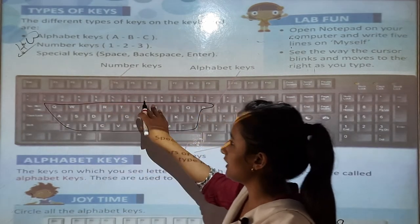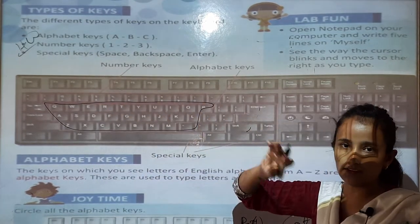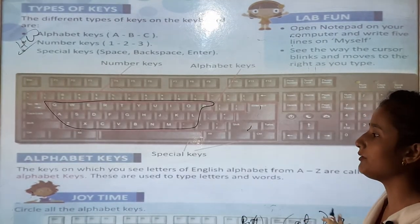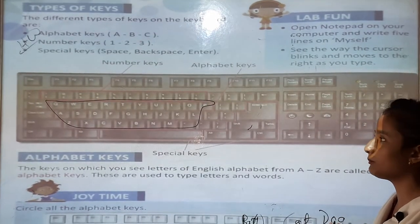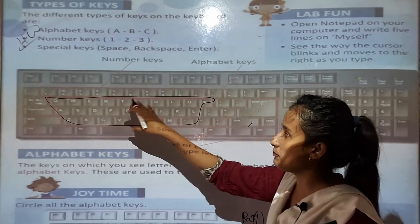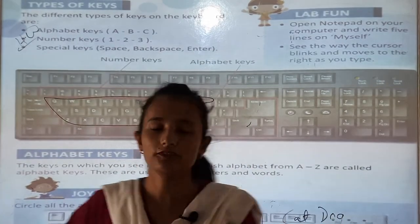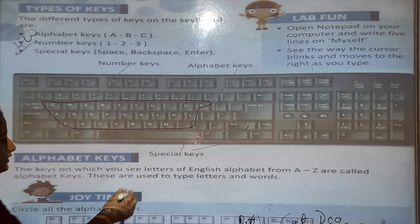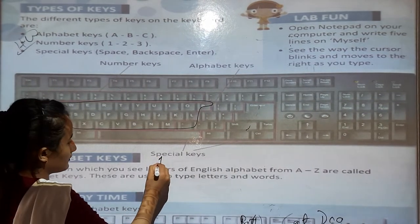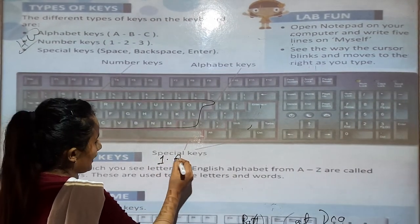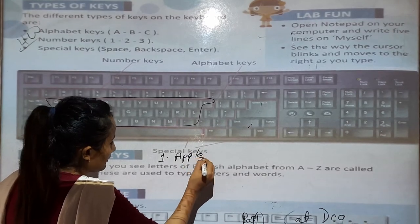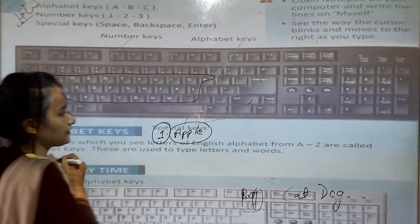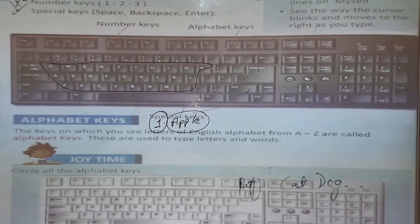With the help of alphabetical keys, we can type any words on a computer. Now, number keys — with the help of number keys we can type numbers. For example, 1, and words like Apple. So these are the number keys and alphabet keys on a computer.